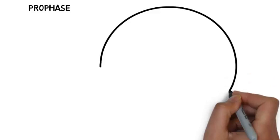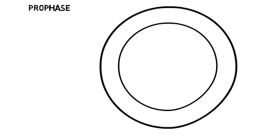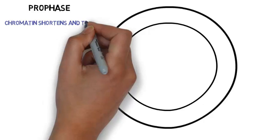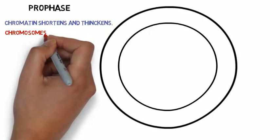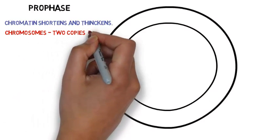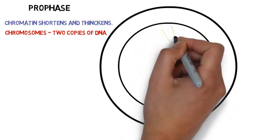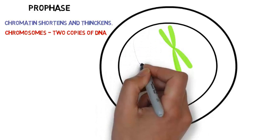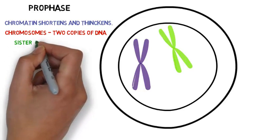The first phase of mitosis is called prophase. We'll draw in our cell membrane and our nuclear membrane. It is at this point in prophase that the chromatin shortens and thickens — it's no longer thread-like — and we start to be able to see the chromosomes. For each chromosome, there are two identical copies of DNA.